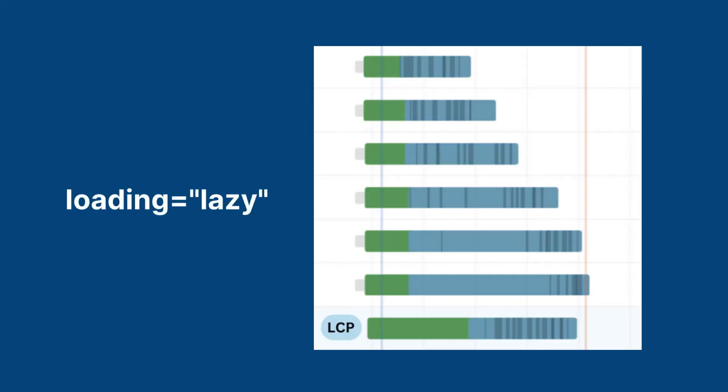If you use JavaScript to lazy load the LCP image, then disable lazy loading. Lazy loading can also be a useful attribute to add to less important images that compete with the LCP image. As demonstrated in this video, improving LCP can have an impact on website performance and in some cases mainly requires small changes. Once a metric has been improved, it's a good idea to monitor it.